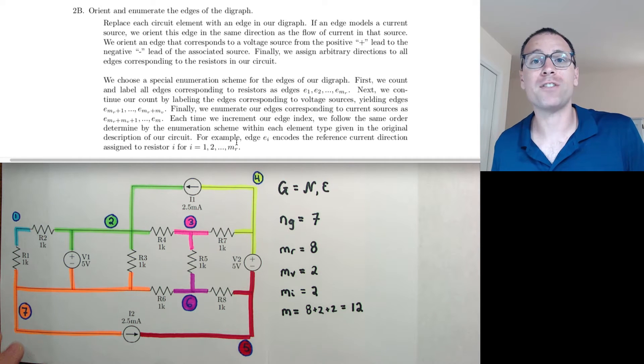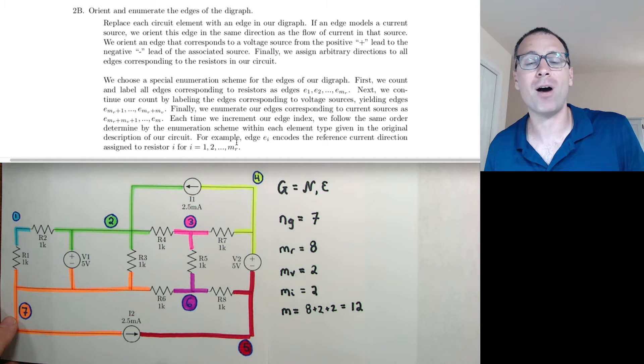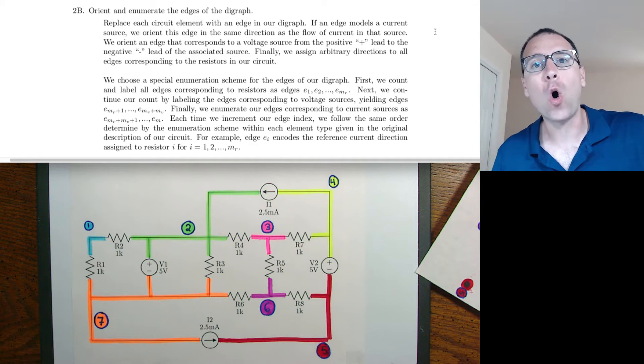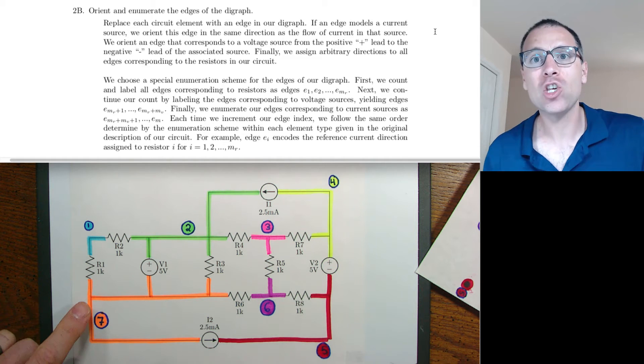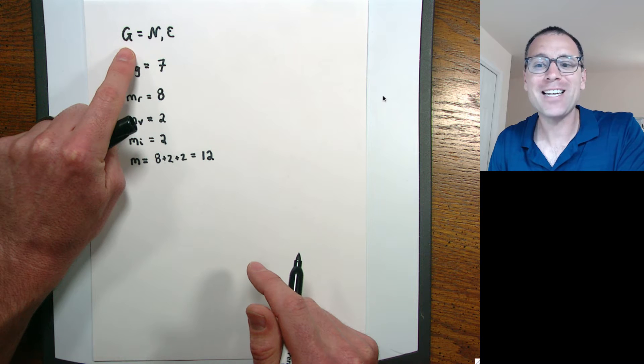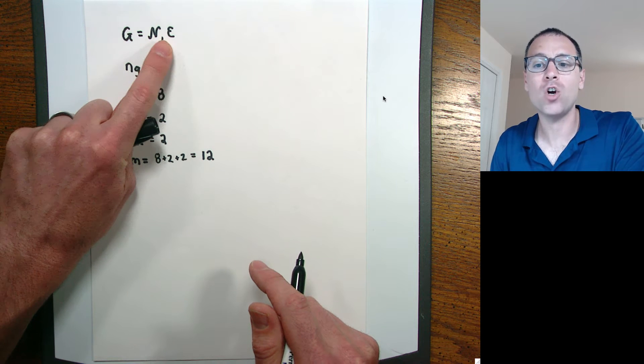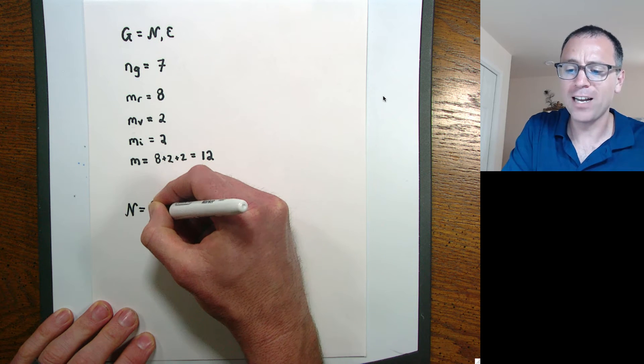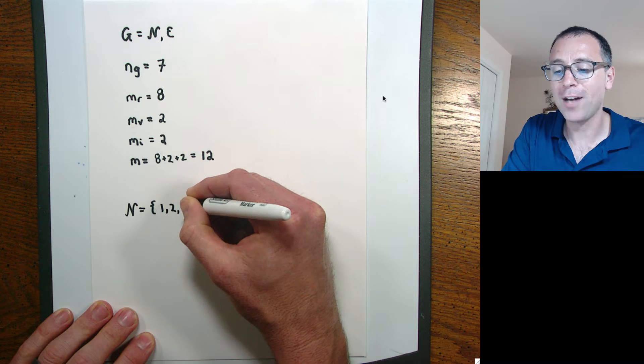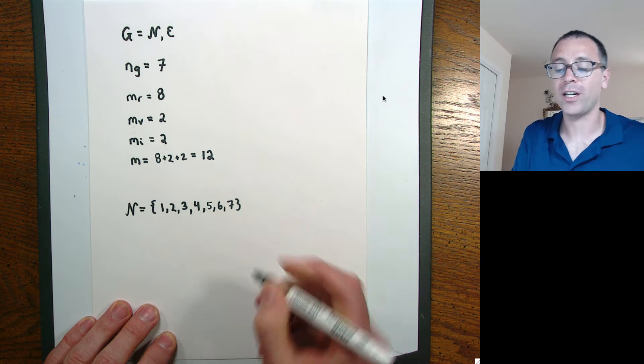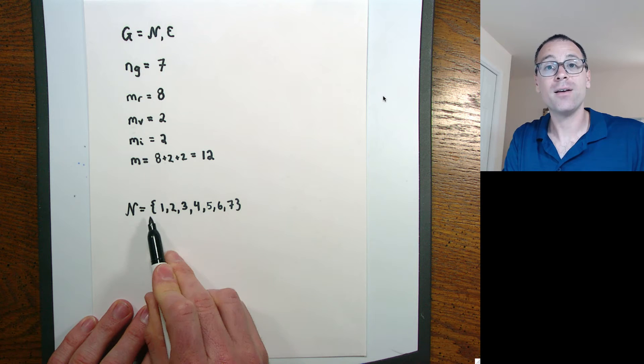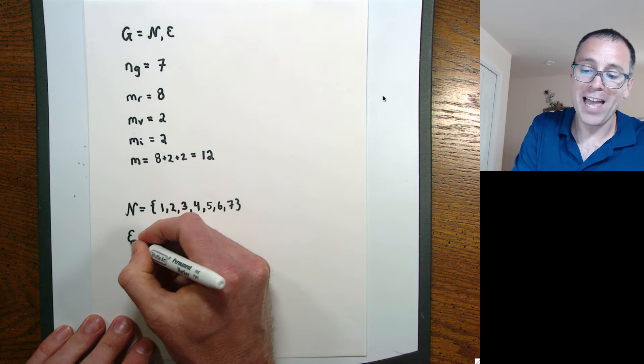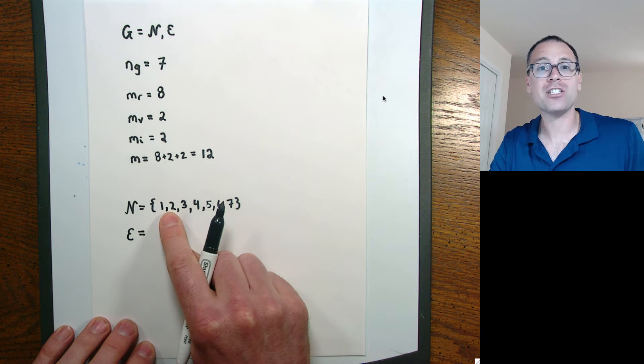Let's move on to the second part of step two. Remember, step two is to create a digraph model. 2A was to mark the dimensions. Step 2B is going to be to orient and enumerate all the edges of my directed graph using elements of my circuit. Remember that we said that every directed graph is just a set of nodes and a set of edges. We already saw by our step one in the algorithm that the set of nodes is literally going to be a set of positive integers that counts the number of nodes in our circuit. Since there are seven nodes, we say that N is 1, 2, 3, 4, 5, 6, 7.